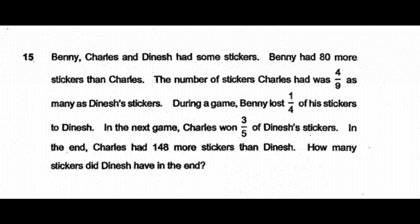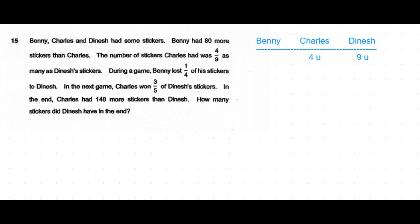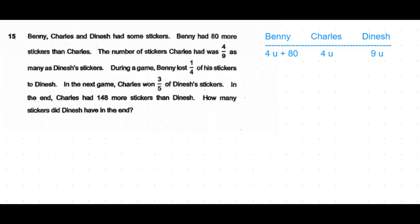Let's table out Benny, Charles, and Dinesh. Charles had four-ninths as many stickers as Dinesh, so let Charles be 4 units and Dinesh 9 units. Benny had 80 more stickers than Charles, so Benny becomes 4 units plus 80. In the first game, Benny lost one-fourth of his stickers to Dinesh.